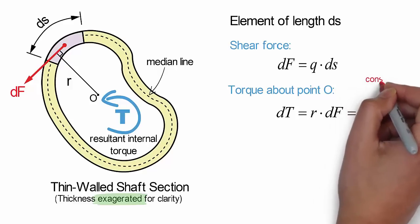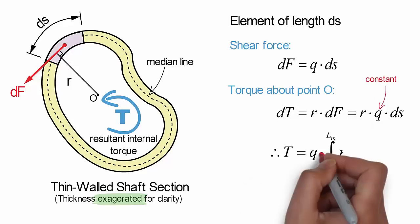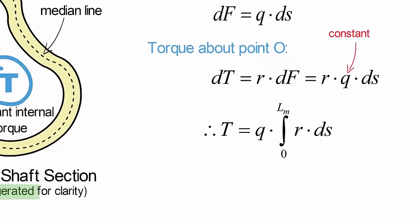If we recall from previous video, shear flow is constant in the case of torsion and thus can be removed from the integral, resulting in the following integral equation.